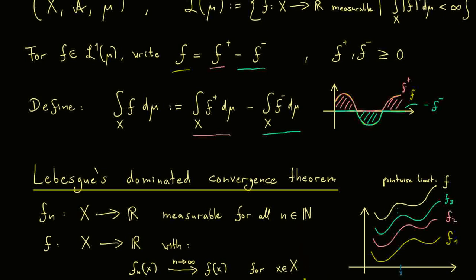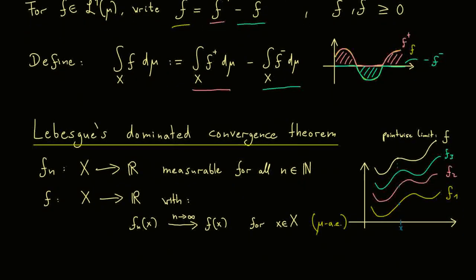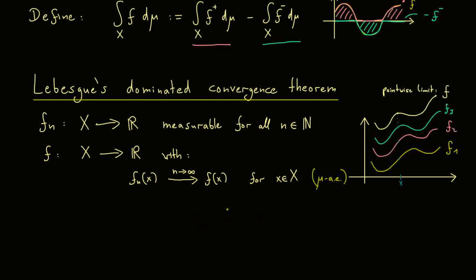However, you know we are in the realm of measure theory. This means we don't need this property exactly everywhere. It's sufficient that we have it almost everywhere. Almost always means with respect to our measure μ here. And in short, we write this as μ almost everywhere. Please recall that this means exactly that the set where this does not hold is a set of measure zero, so μ of the set is equal to zero. So until now, the assumptions are not so strange. You have a sequence of measurable functions and also the pointwise limit of this sequence.